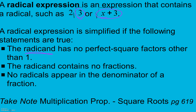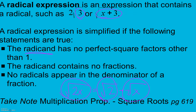On page 619 is the multiplication property of radicals. It says that we can take the square root of a product and split it into the square root of something times the square root of something. For example, the square root of 2x is the exact same thing as the square root of 2 times the square root of x. Either form works — they mean the same thing.